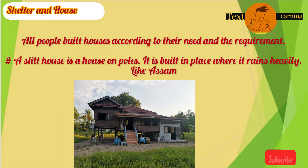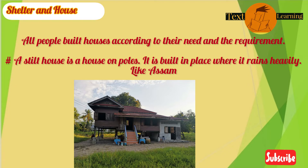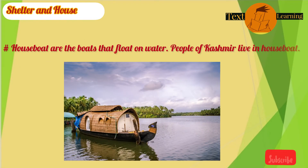All people build houses according to their needs and requirements. A stilt house is a house on poles. It is built in places where it rains heavily. House boats are boats that float on water. People of Kashmir live in house boats.